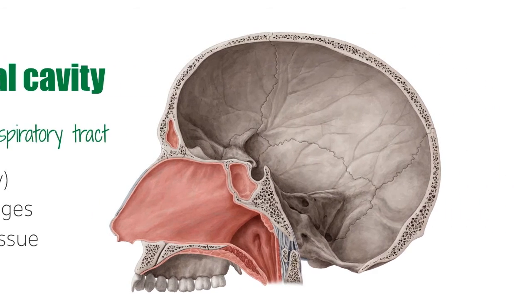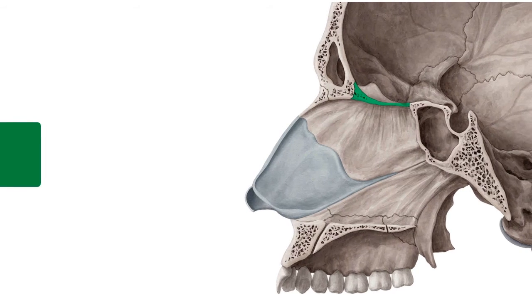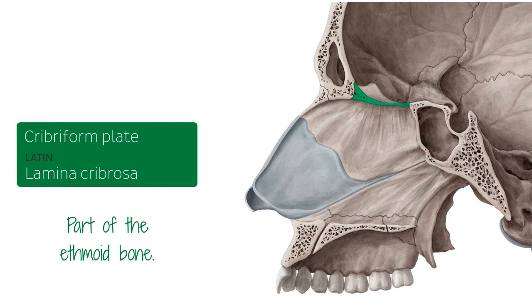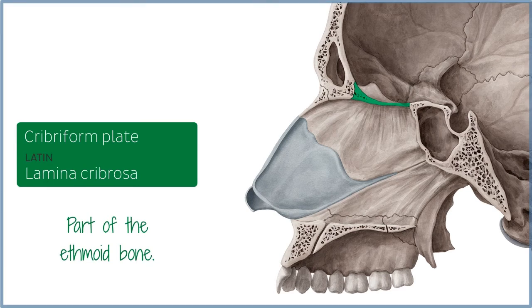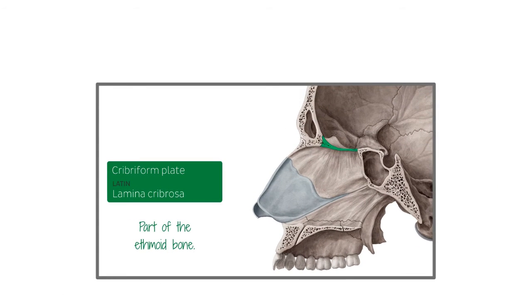The cribriform plate is part of the ethmoid bone. It's an elongated horizontal plate in the midline on the anterior floor of the...